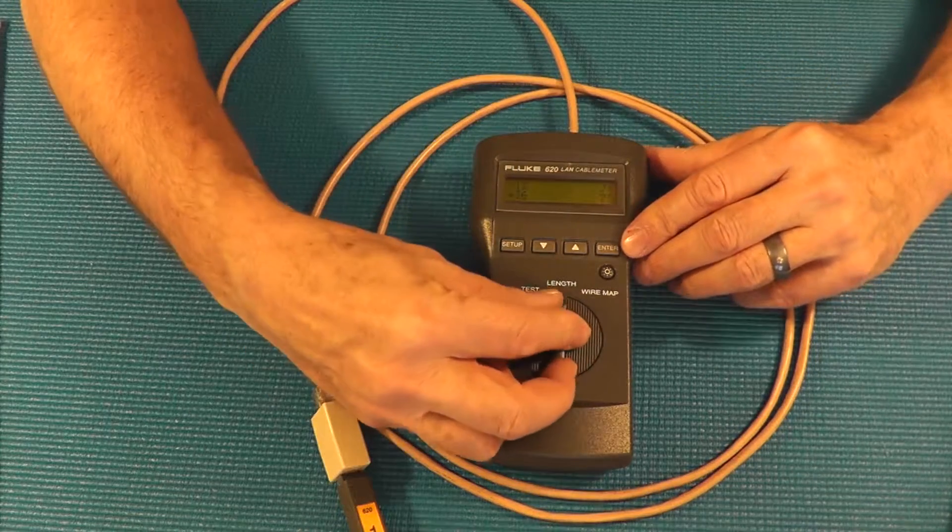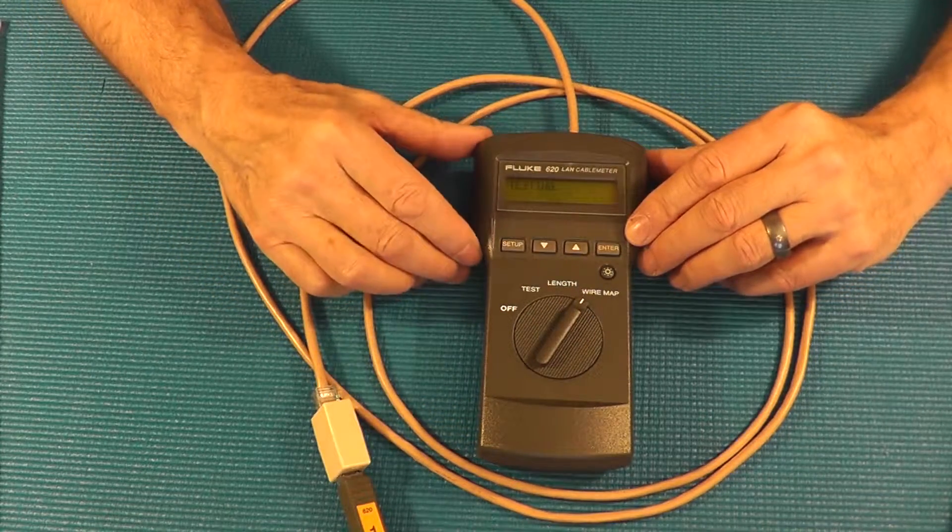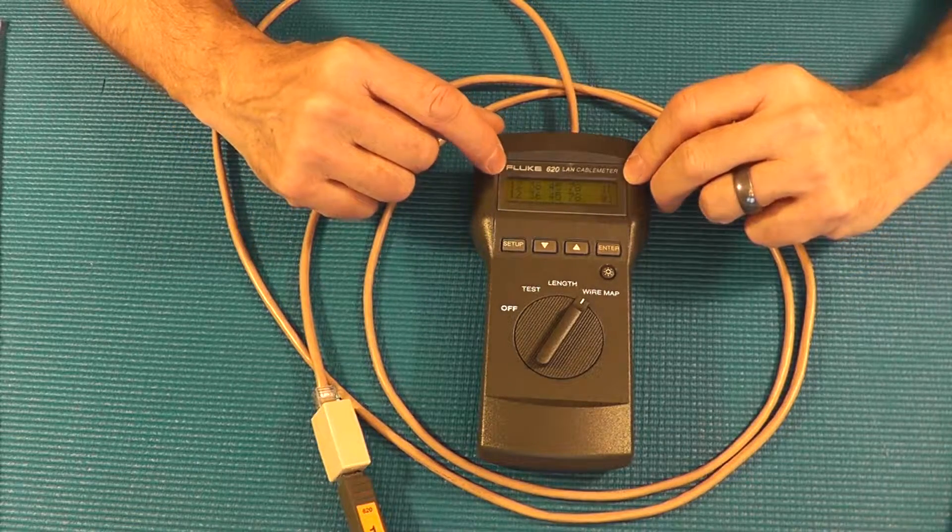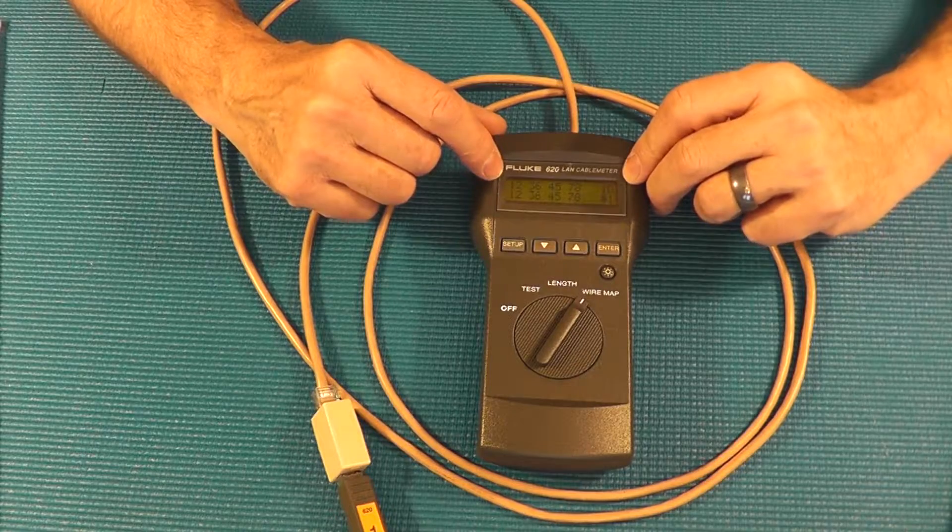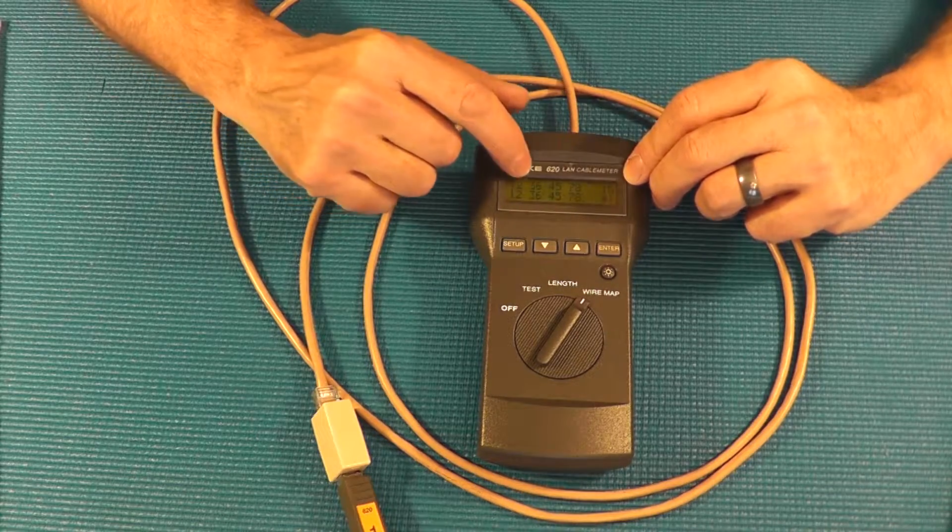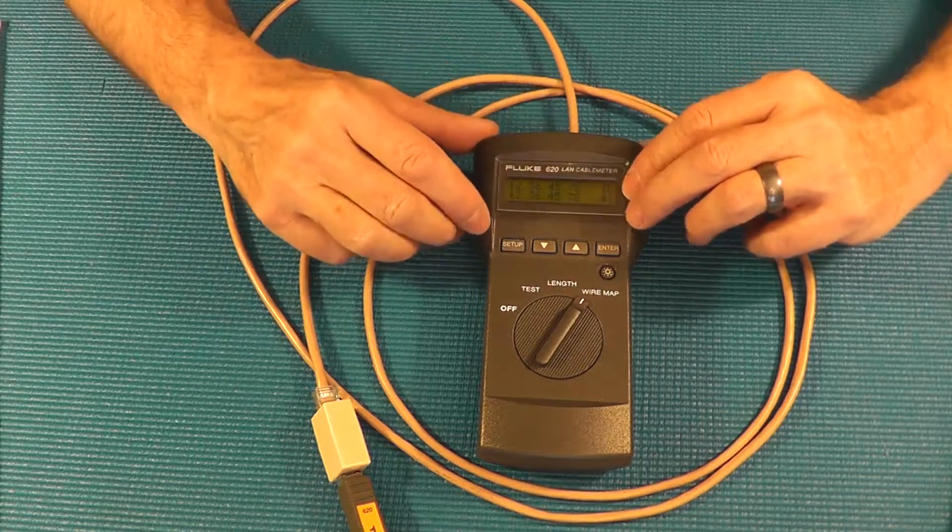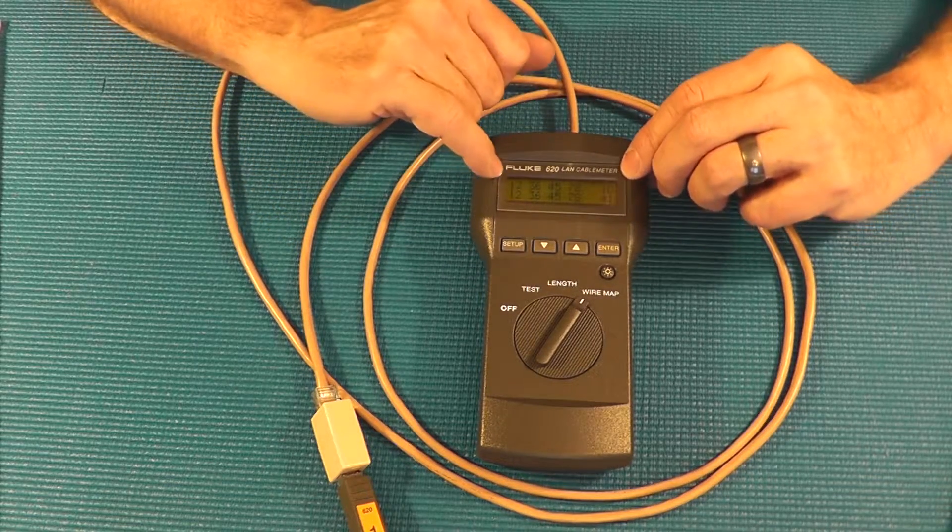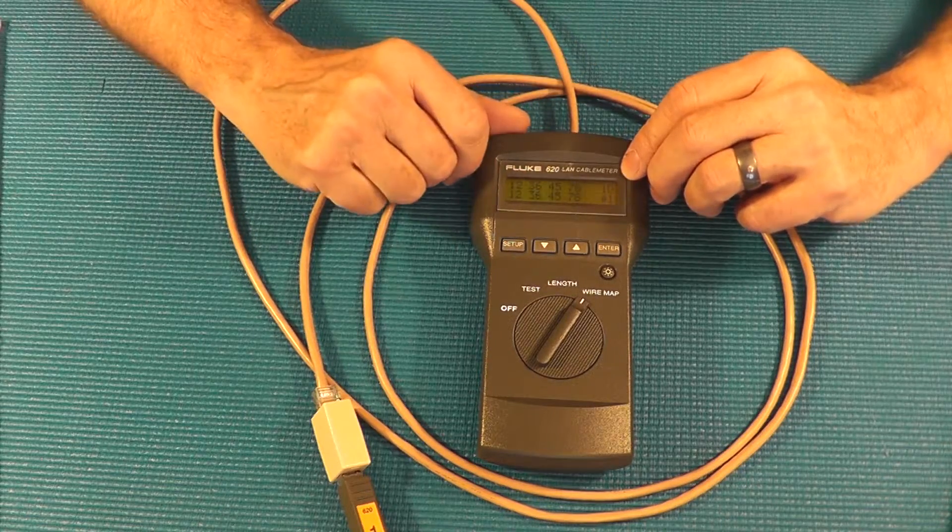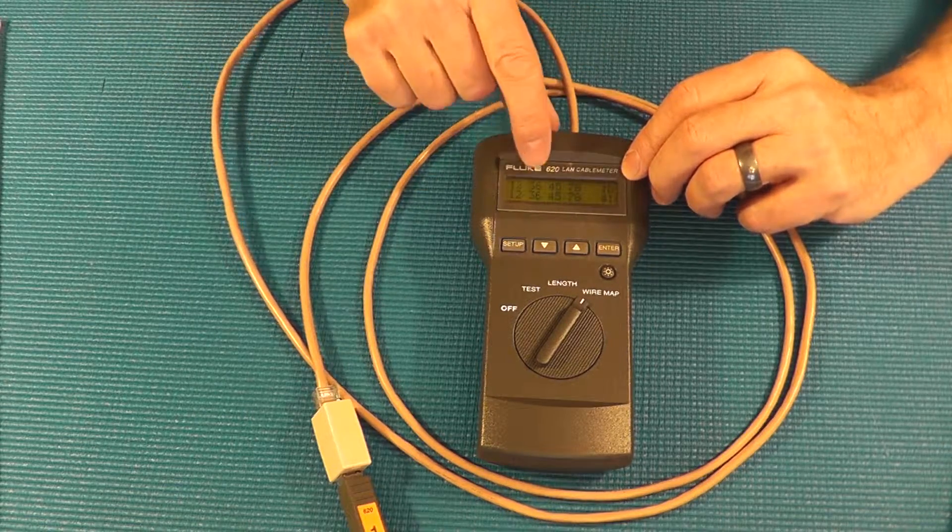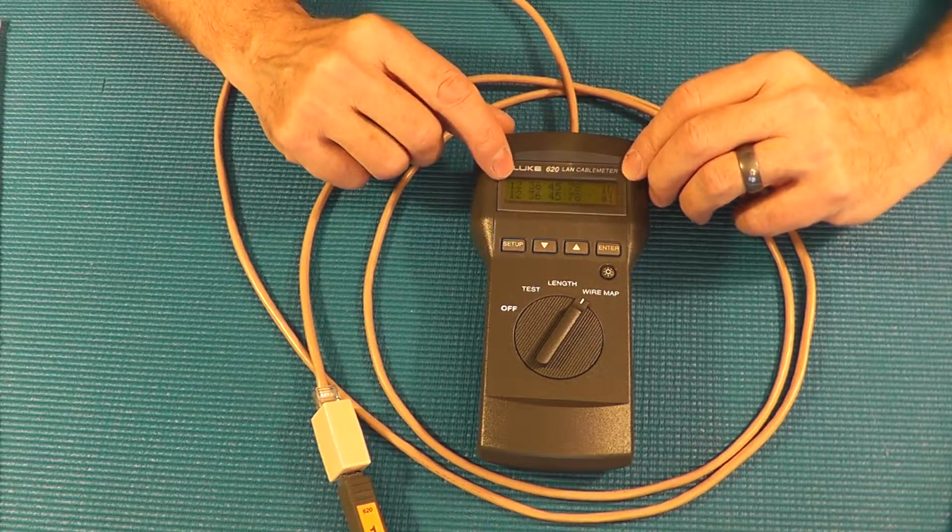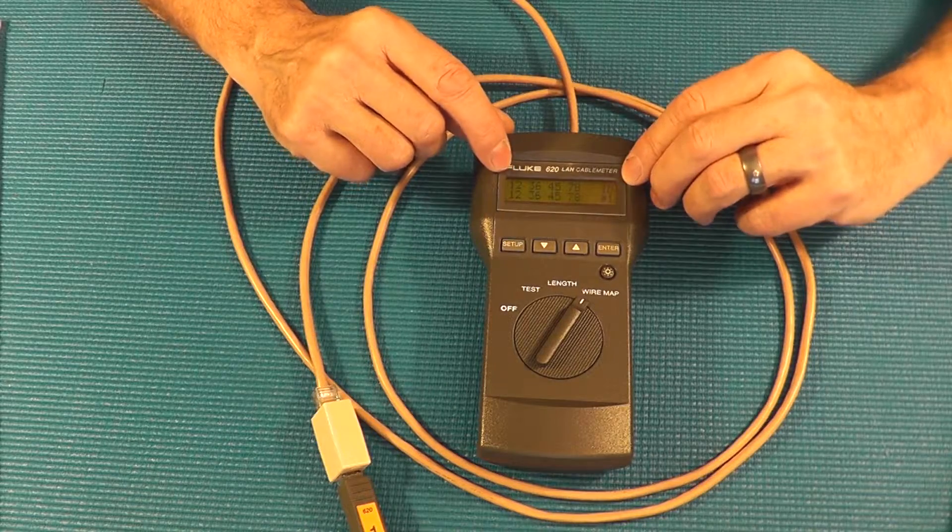The last thing we're going to look at on this device is the wire map. Now this gives us kind of the same indication that you saw a moment ago on the voice data video tester where you have the two rows of numbers. One difference though is that the Fluke LAN meter puts things into their wire pair so you're seeing the orange pair, the green pair, the blue pair and the brown pair and their position number if you will.